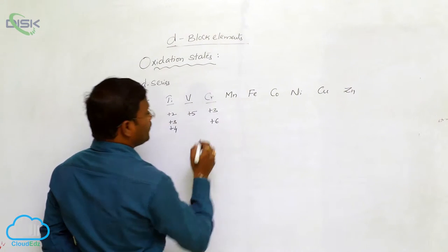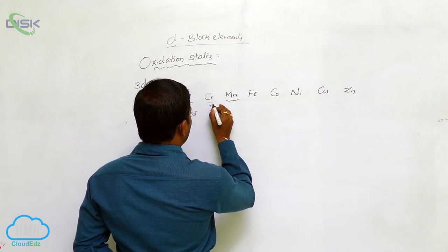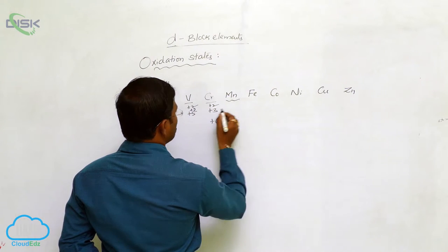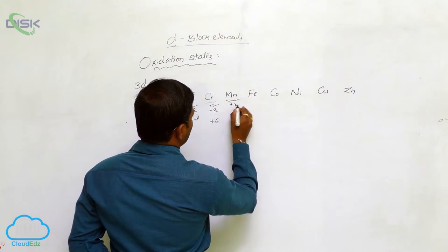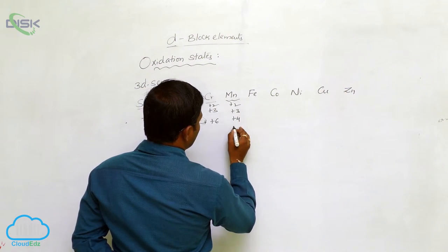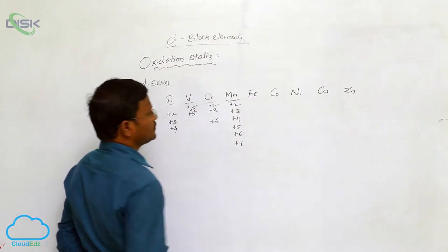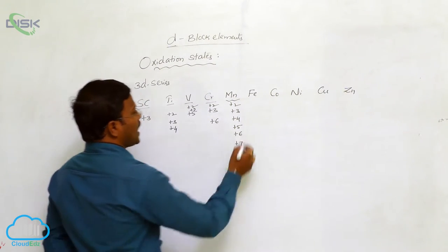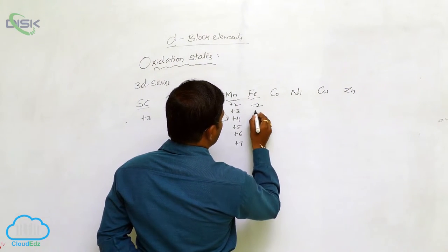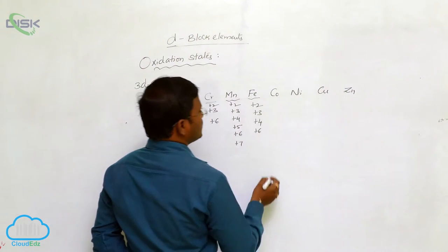Manganese is a special category — its common oxidation states are plus 2, plus 3, plus 4, plus 5, plus 6, and plus 7. For iron, the most probable oxidation states are plus 2, plus 3, very rarely plus 4, and plus 6.